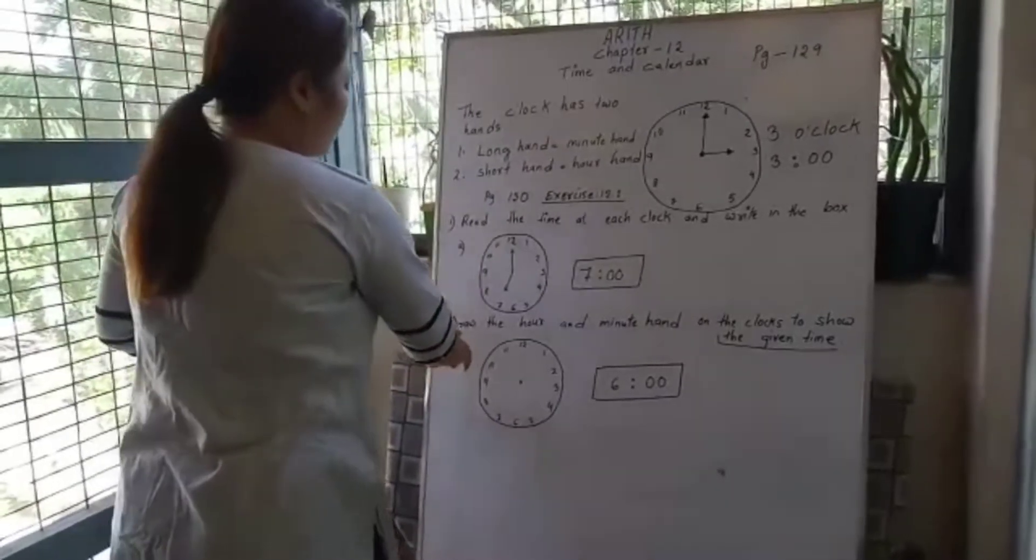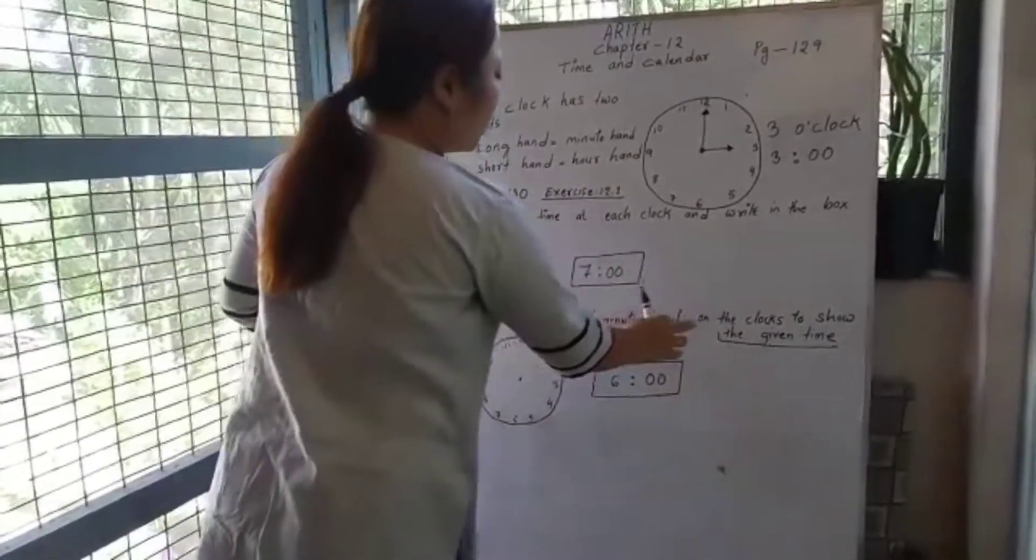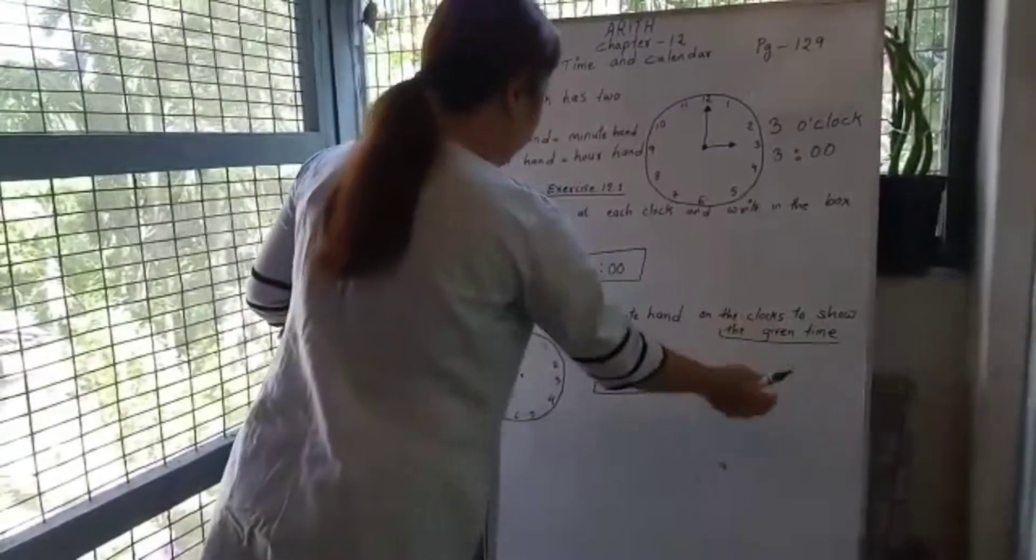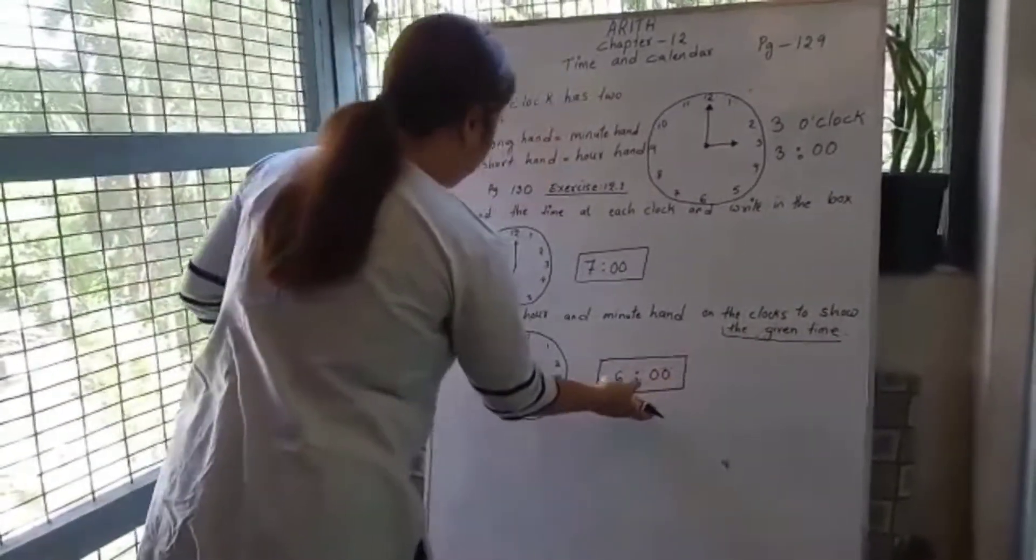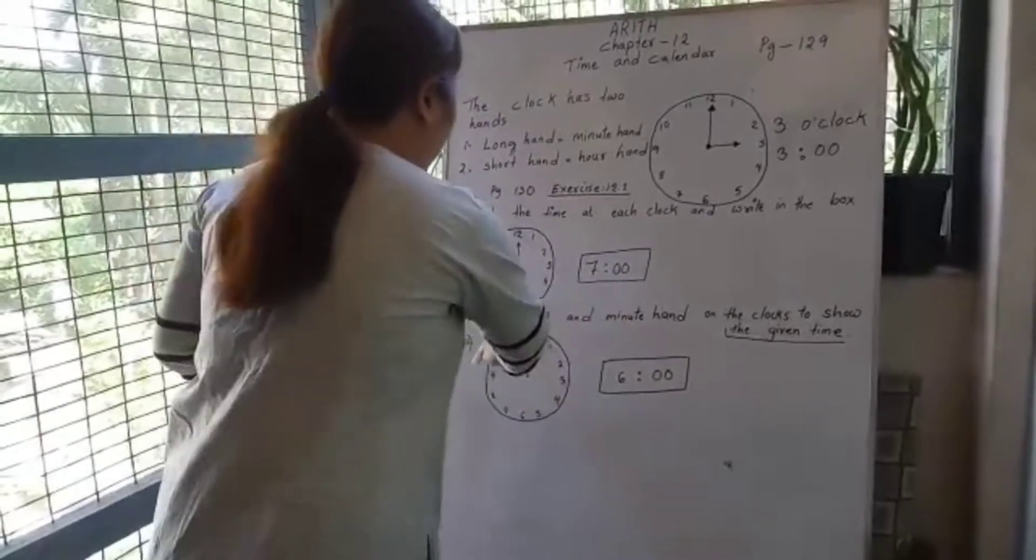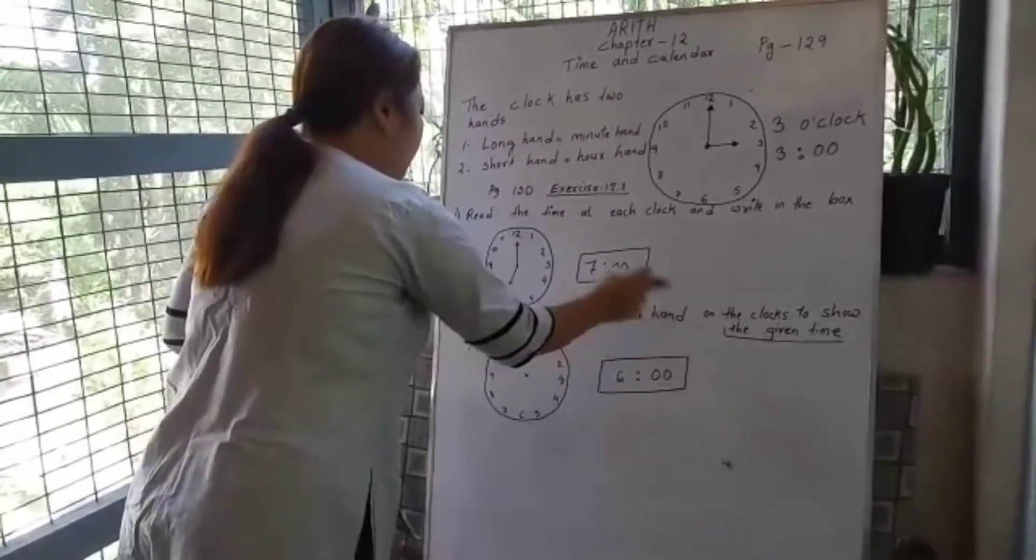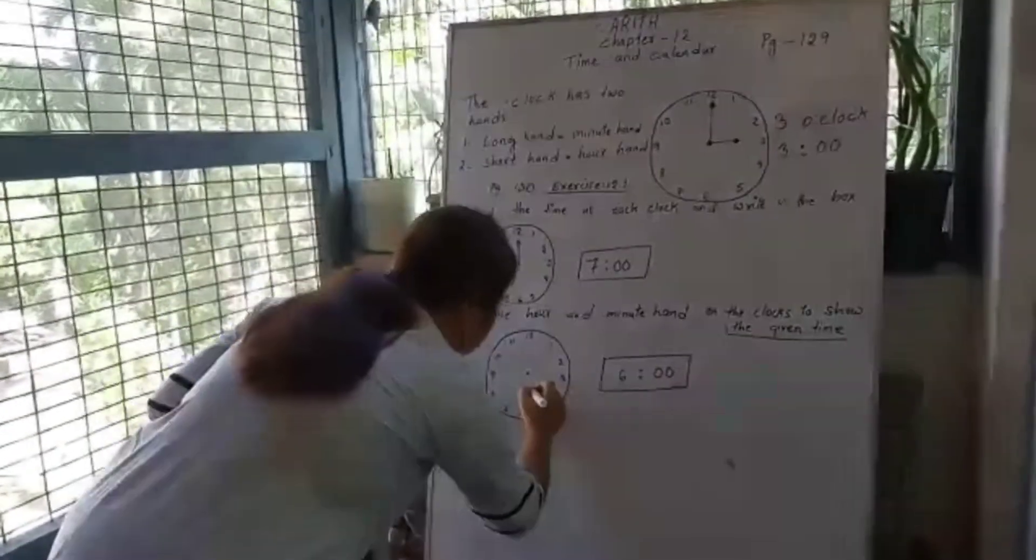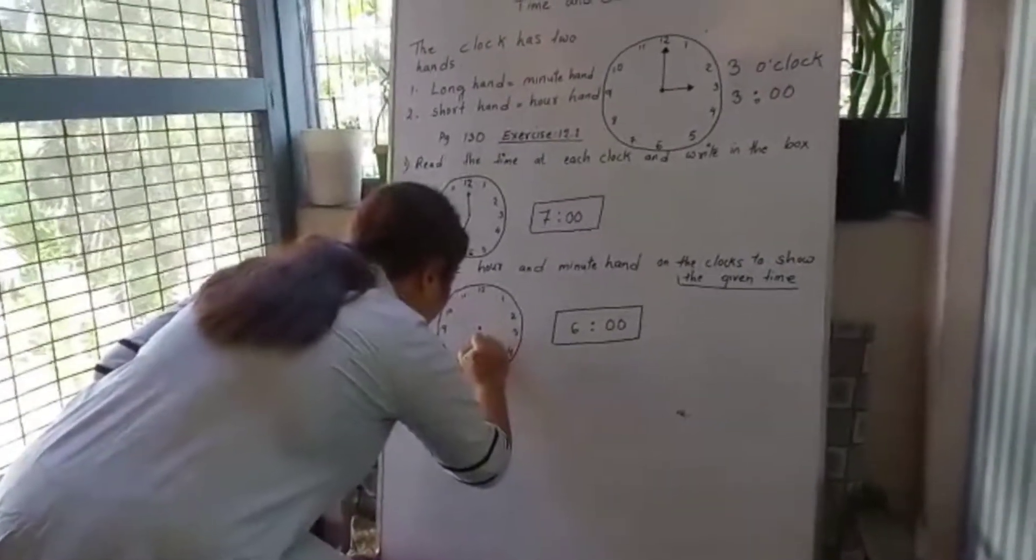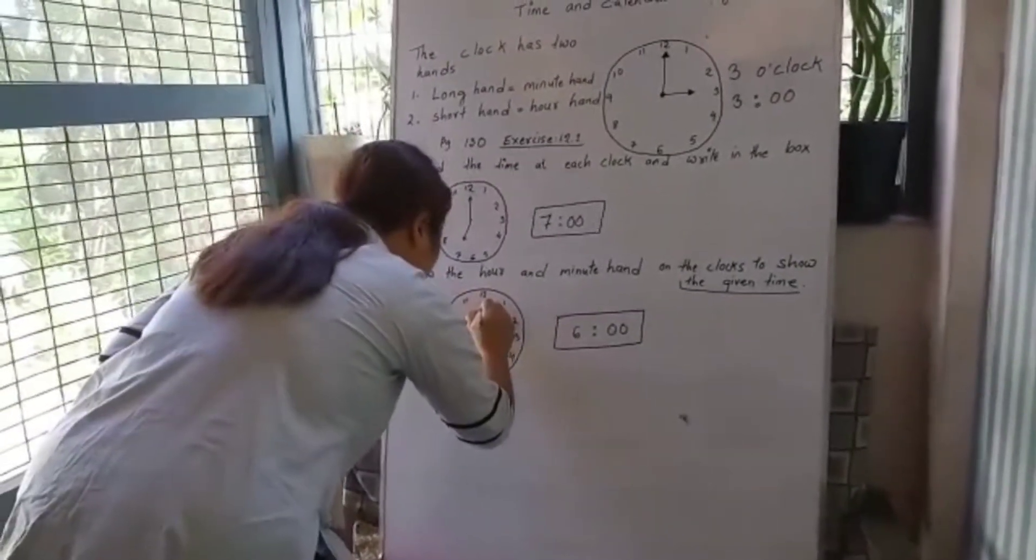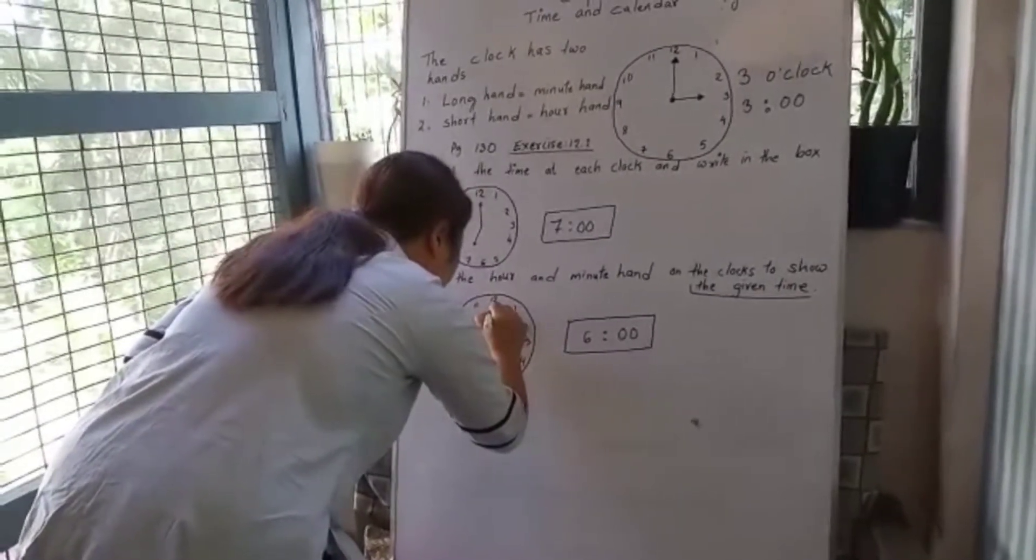Question number 2: draw the hour and minute hand on the clock to show the given time. Here, 6 o'clock is the given time, so we have to draw the hour hand and the minute hand. The short hand will be at 6 and the long hand will be at 12.